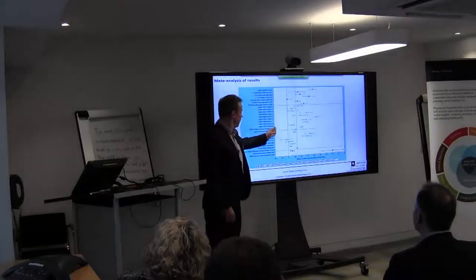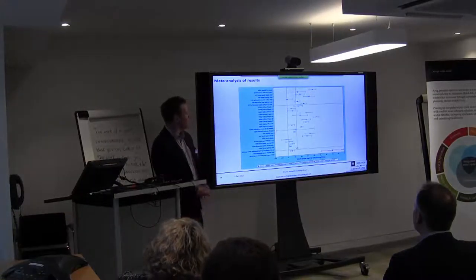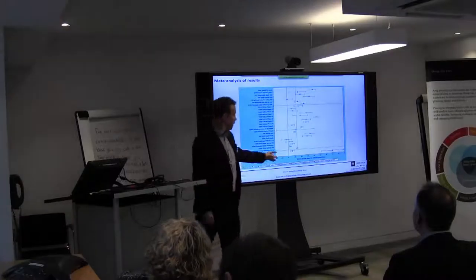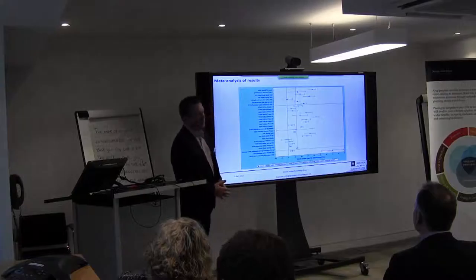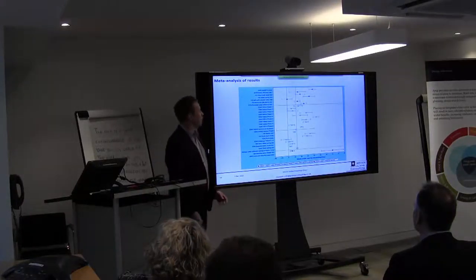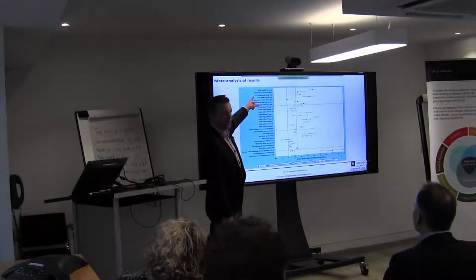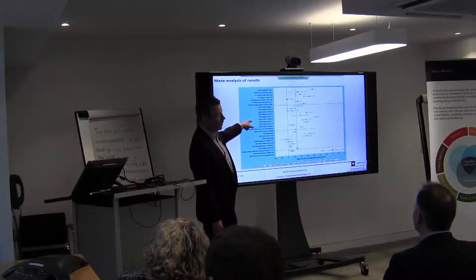For each of the studies, we've got a dot and some bars. The dot is the mean saving from each individual study, and the bars are the confidence intervals. Any study that has bars extending to the left of zero is effectively not statistically significant. The orange-yellow diamond is the weighted mean saving from all of those studies combined.